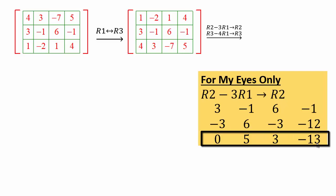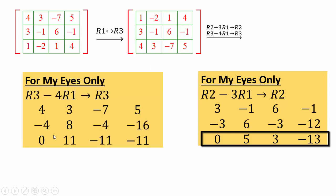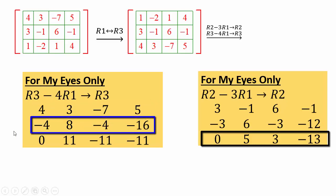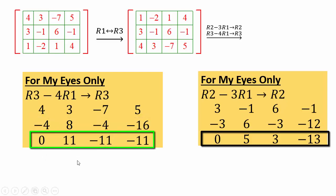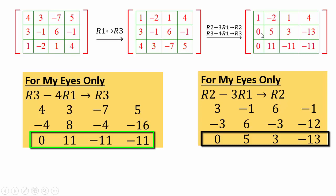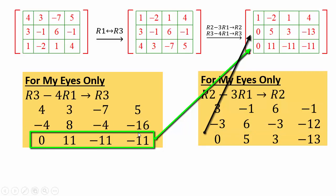For row 3: original is 4, 3, negative 7, 5. Multiply row 1 by negative 4 to get negative 4, 8, negative 4, negative 16. Adding them gives 0, 11, negative 11, negative 11. So the new matrix has row 1 unchanged, new row 2 as 0, 5, 3, negative 13, and new row 3 as 0, 11, negative 11, negative 11.